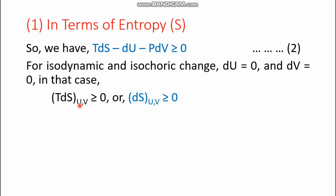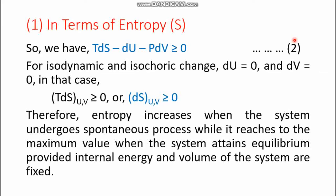For isodynamic and isochoric change, dU = 0 and dV = 0, so the equation reduces to TdS ≥ 0. Since T cannot be zero (absolute zero is not possible), we have dS ≥ 0. Therefore, entropy increases when the system undergoes a spontaneous process, and it reaches its maximum value at equilibrium, provided internal energy and volume of the system are fixed.